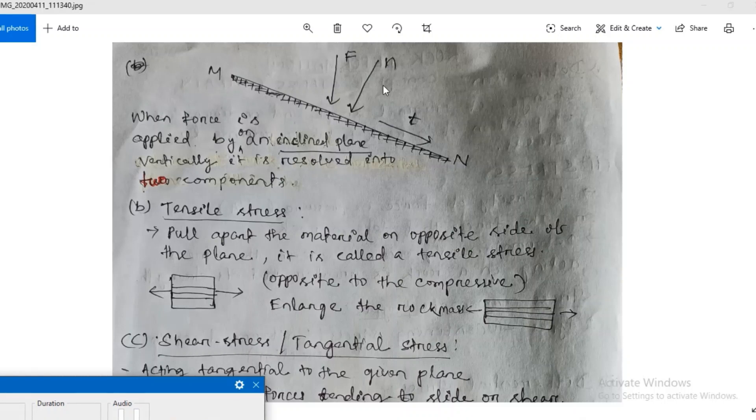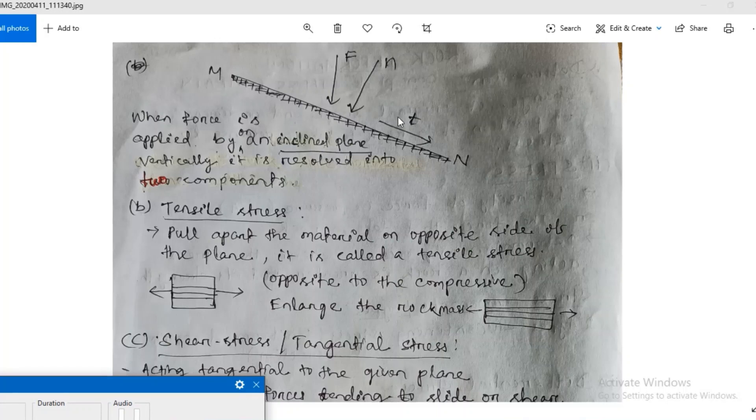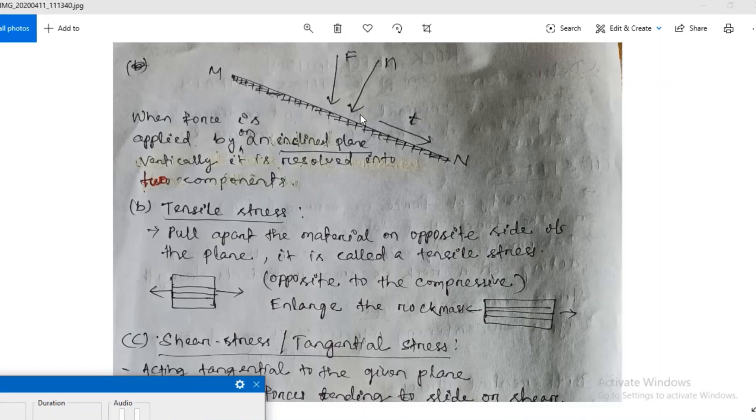MN is the inclined plane. F is the stress force and it resolves into N and T. N is your normal stress, T is your tangential stress. Normal stress can be of two types: compressive and tensile.